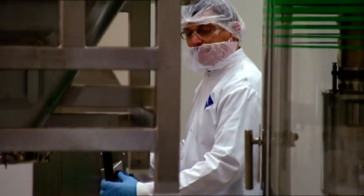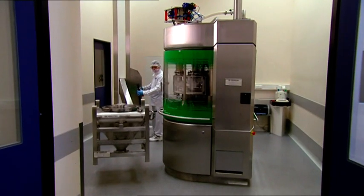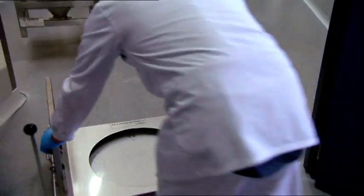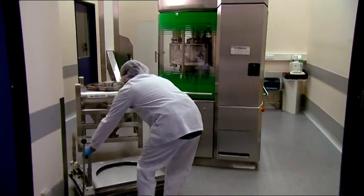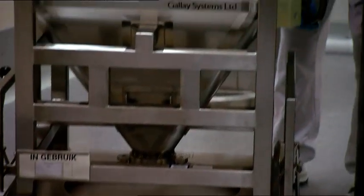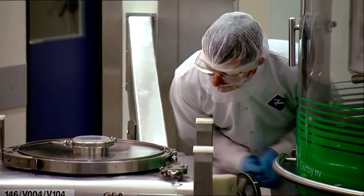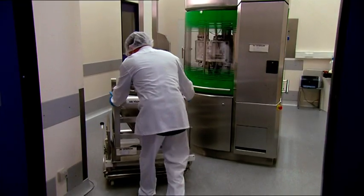The powder IBC can now be removed after closing and undocking the Buck High Containment Valve. This operation is also performed in a fully isolated manner, eliminating any risk of airborne particles being released into the production room or corridors.